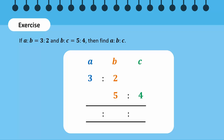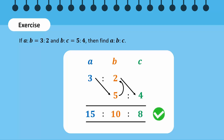Recalling the procedure: we get the first number by multiplying 3 with 5, which gives us 15. We get the second number by multiplying 5 with 2, which gives us 10. We get the third number by multiplying 2 with 4, which gives us 8. So the continued ratio is 15 to 10 to 8.